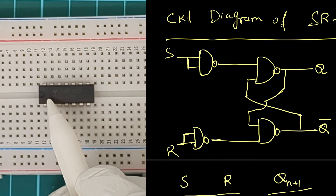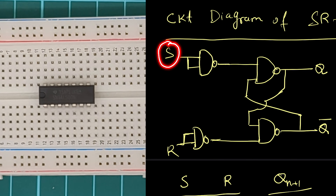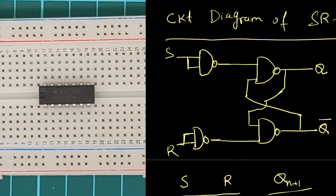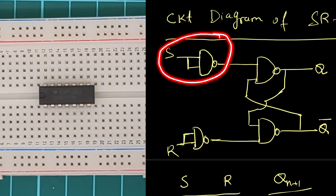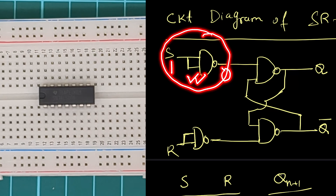For this one, the first NAND gate we will use for the inverter — we give input S and we get S bar. So we will use the first NAND gate to build this. When we do this practical, you will know that you don't need to check the IC before doing the practical. I will make and test the circuit step by step so you don't need to test the IC beforehand. We give input 0 and check if the output is 1, then give 1 and check if the output is 0. That means this NAND gate is already tested.